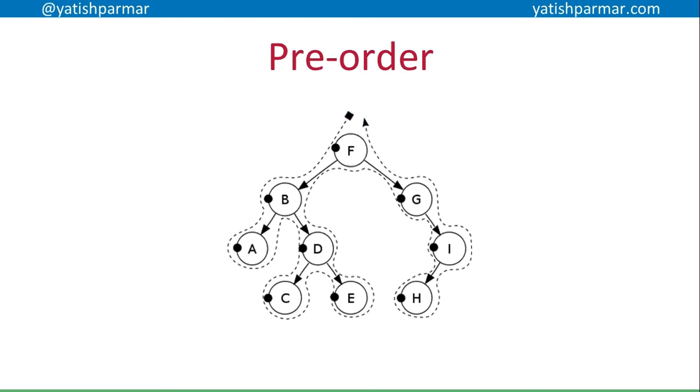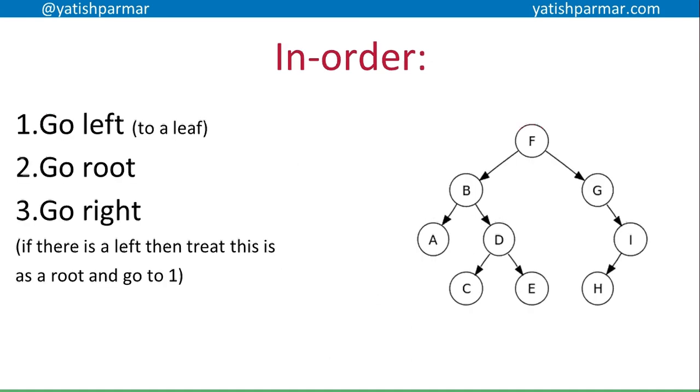So what that would look like, if you follow the dotted line around the outside of my tree, every time it hits a dot, that's the node that you output. This is called pre-order. F, B, A, D, C, E. And then it goes up, and down the other side, G, I, H. You can see it's in like order of which the nodes were added to a tree almost.